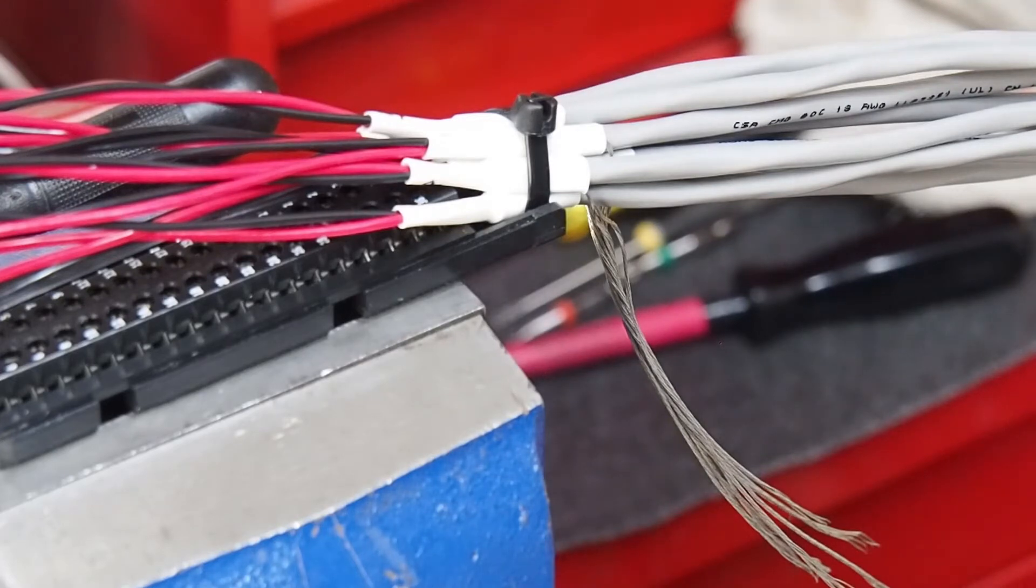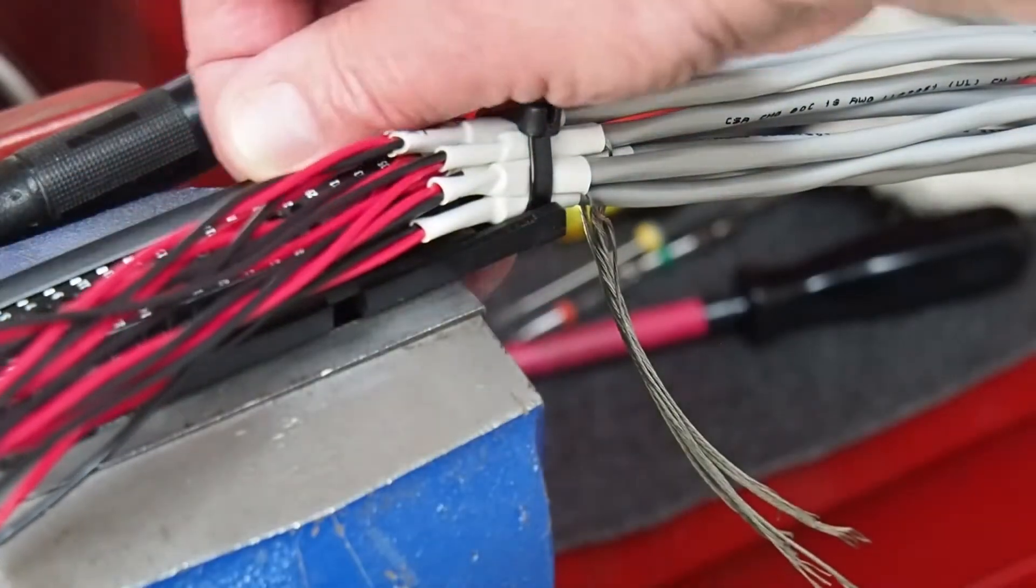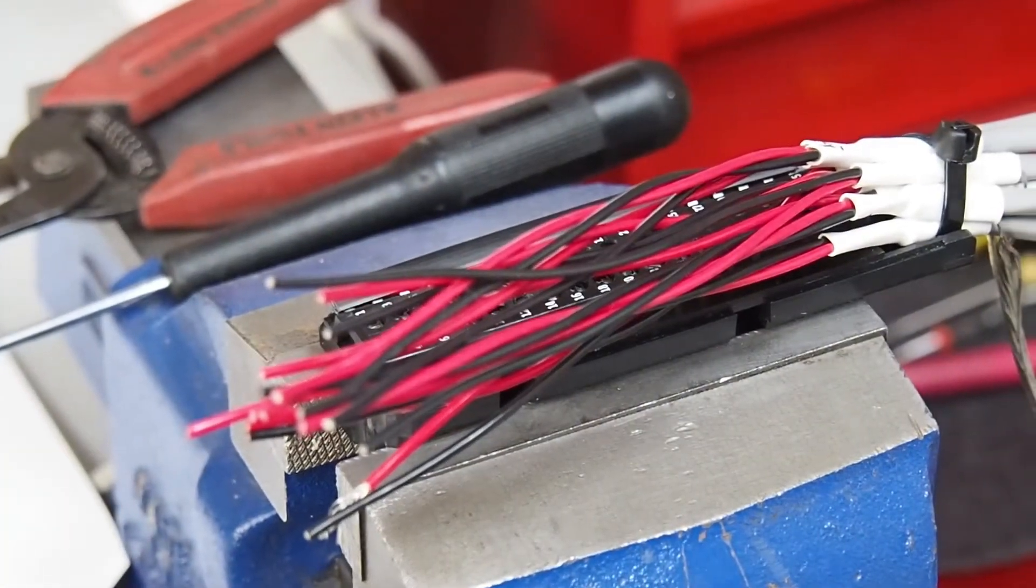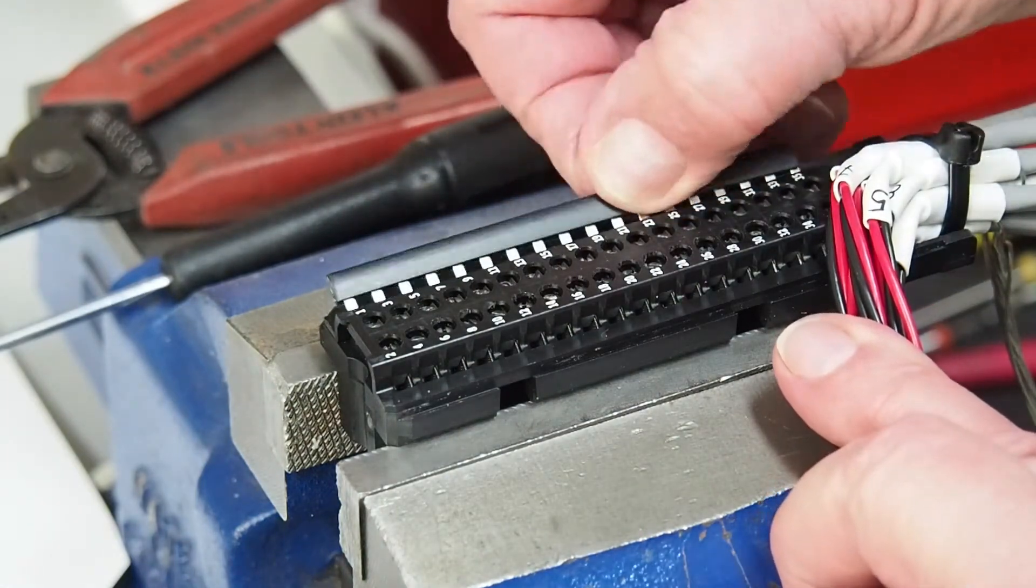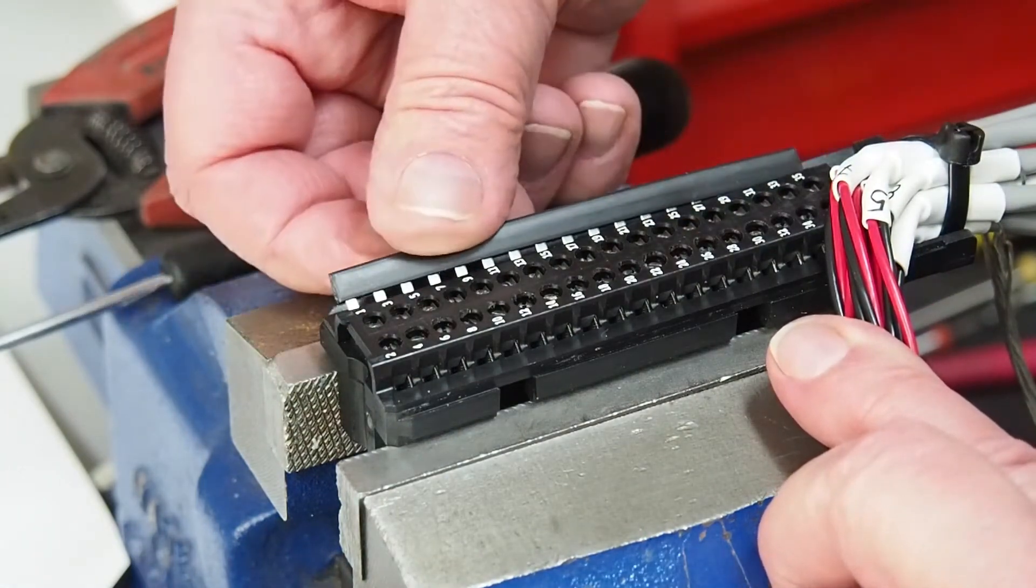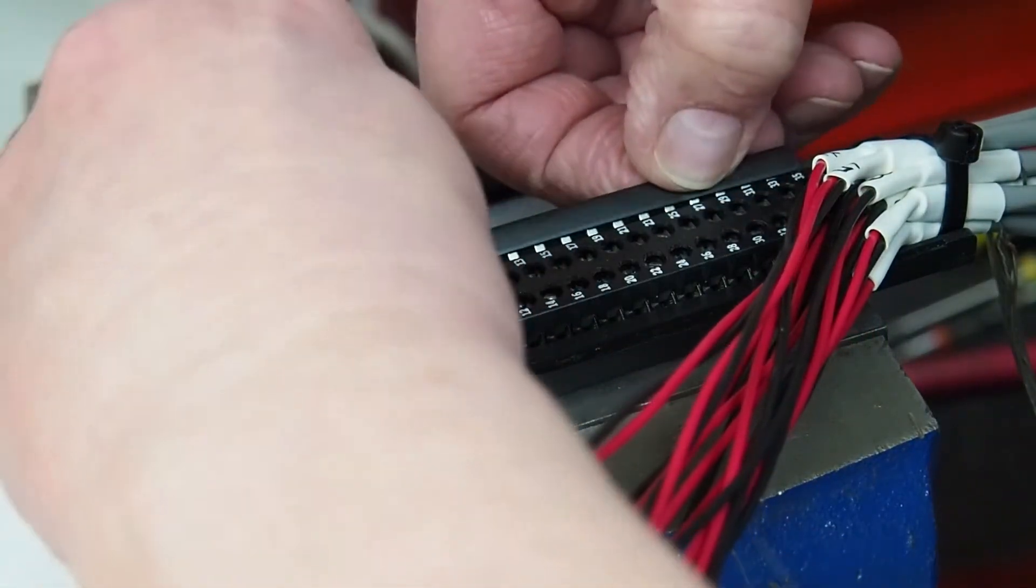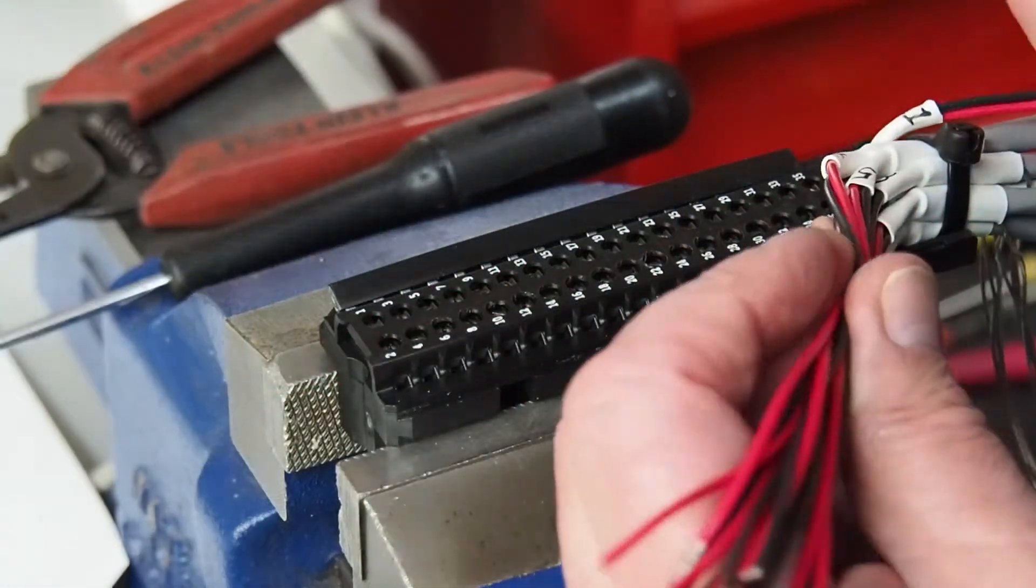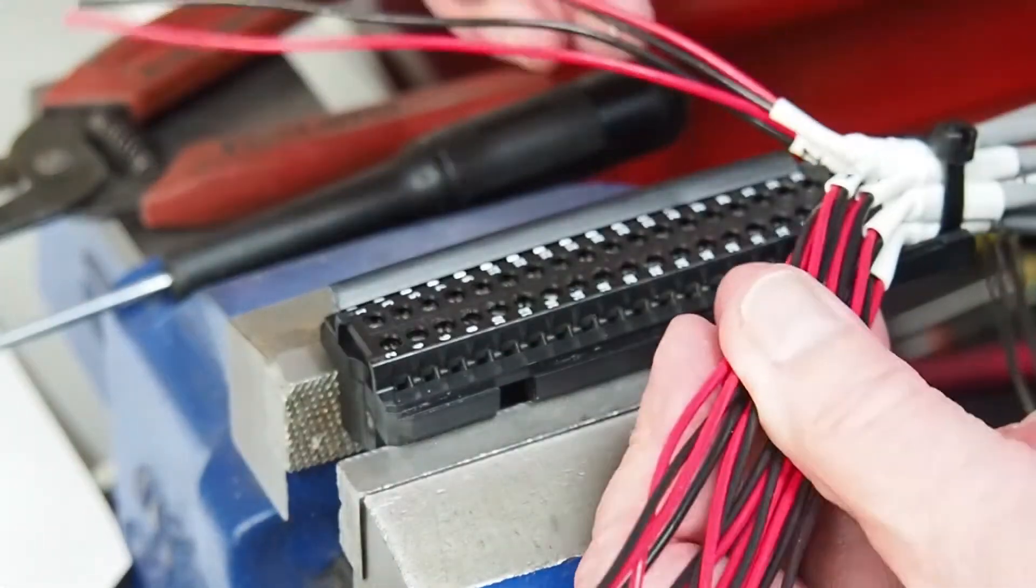So again, here's our jumper bar and we'll swing back around just a bit. Here's our Weidmuller 1576 with six zeros. Pull it back just a bit and find common one and common two.